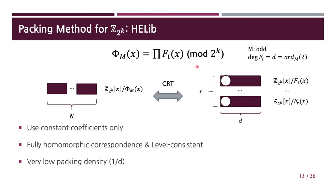Meanwhile, it is known that the cyclotomic polynomial vectorizes into polynomials of the same degree d. One way to pack Z2K messages is to leverage CRT isomorphism but use only constant coefficients and put zero in the other coefficients. In this way, we can still enjoy fully homomorphic correspondence and level consistency. This method was often used by HELIP and HELIP-based applications. However, the packing density goes too low, namely 1 over d. As we can use only d over 10 due to security reasons, using this method causes over 10 times overhead for MPC over Z2K messages compared to the prime field case.